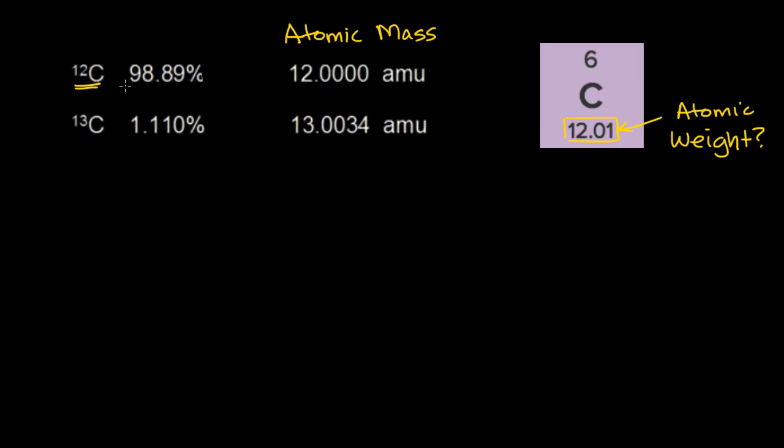So what we want to do is we could take 98.89% and multiply it by 12, and I'll rewrite this percentage as a decimal. So it'll be 0.9889 times 12, and to that, we are going to add 1.11% times 13.0034. So as a decimal, that's going to be 0.0111 times 13.0034 atomic mass units.